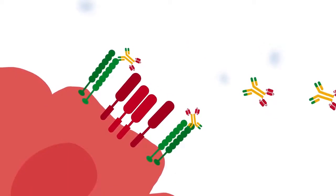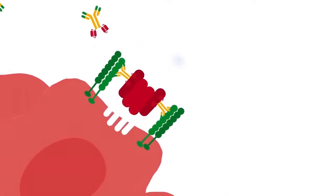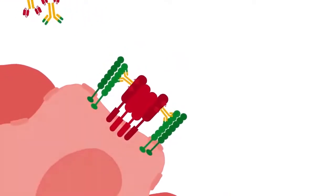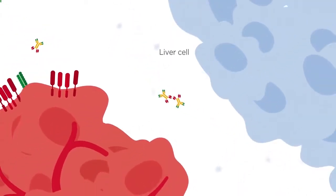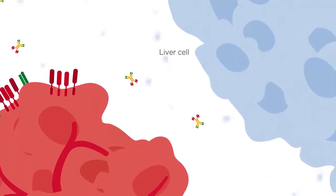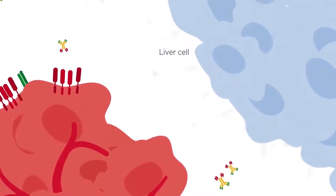The new bispecific Trail R2 CDH17 antibody triggers clustering of trail receptor 2 through cross-linking and induces cell death only in CDH17 positive cells, sparing the liver, overcoming the toxicity previously associated with antibodies that target Trail Receptor 2 only.